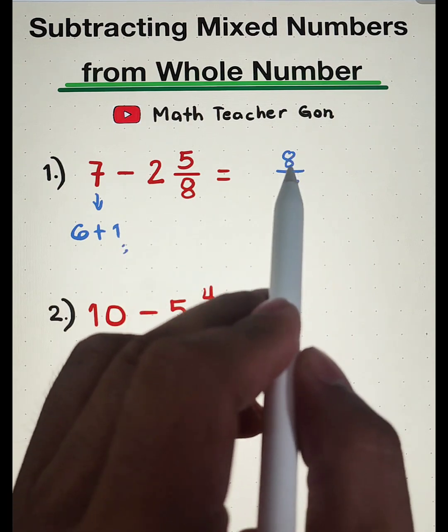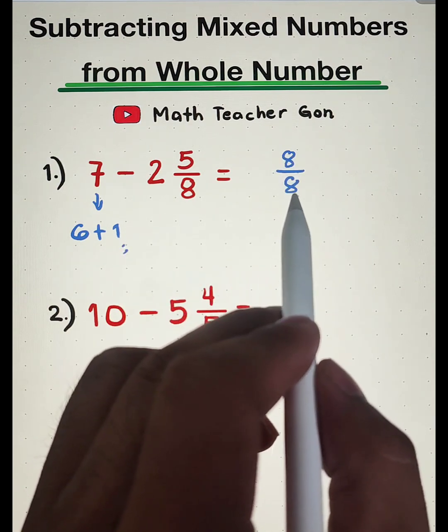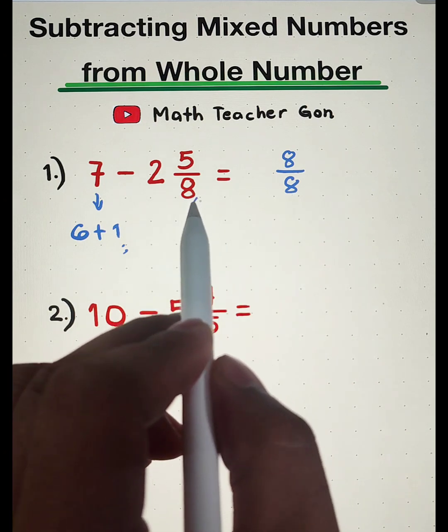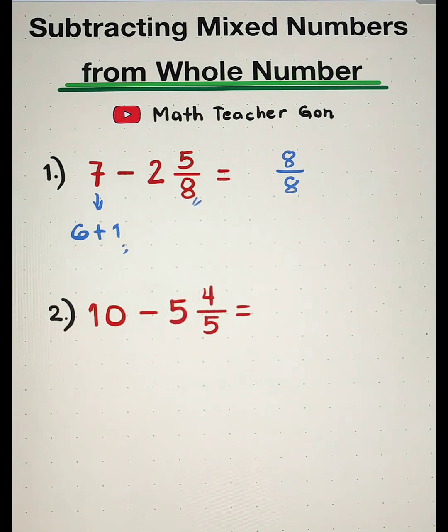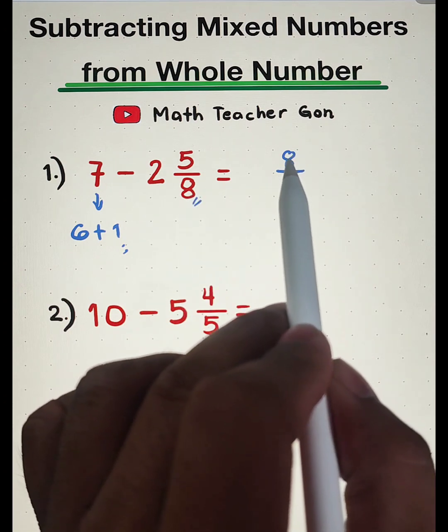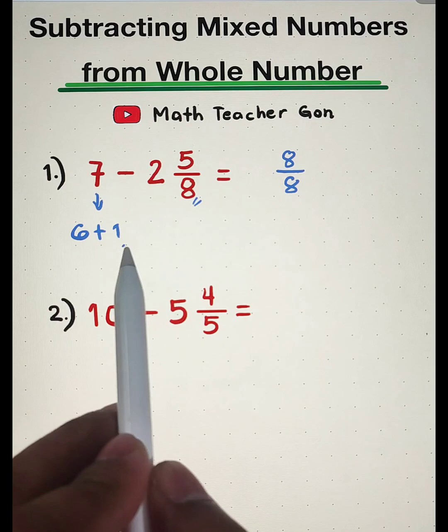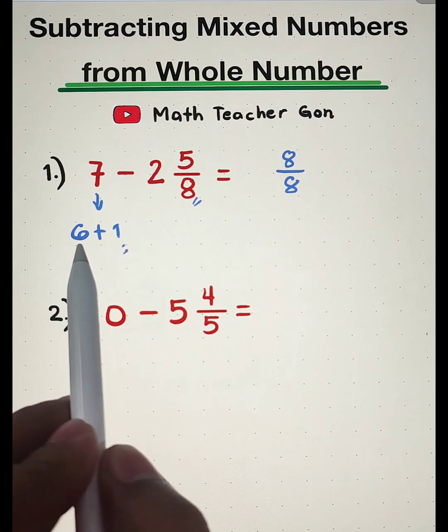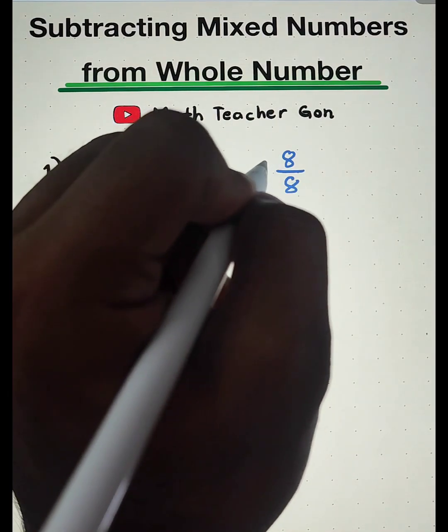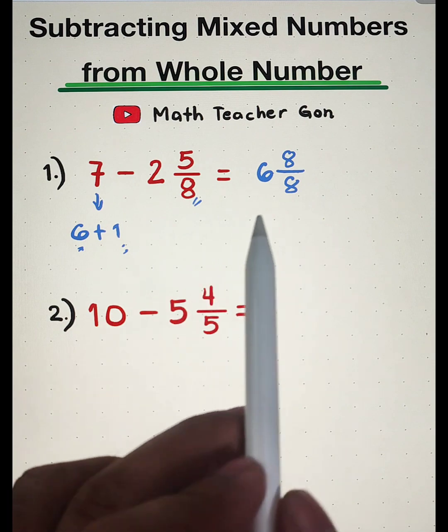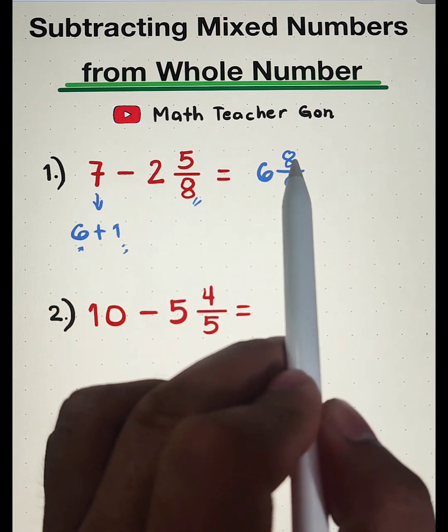So why did I choose 8 over 8? I chose 8 over 8 because of this denominator. Okay, you will copy the denominator, and it will serve as the numerator and denominator of your new fraction. And then I will attach this whole number 6, and it became 6 and 8 over 8.